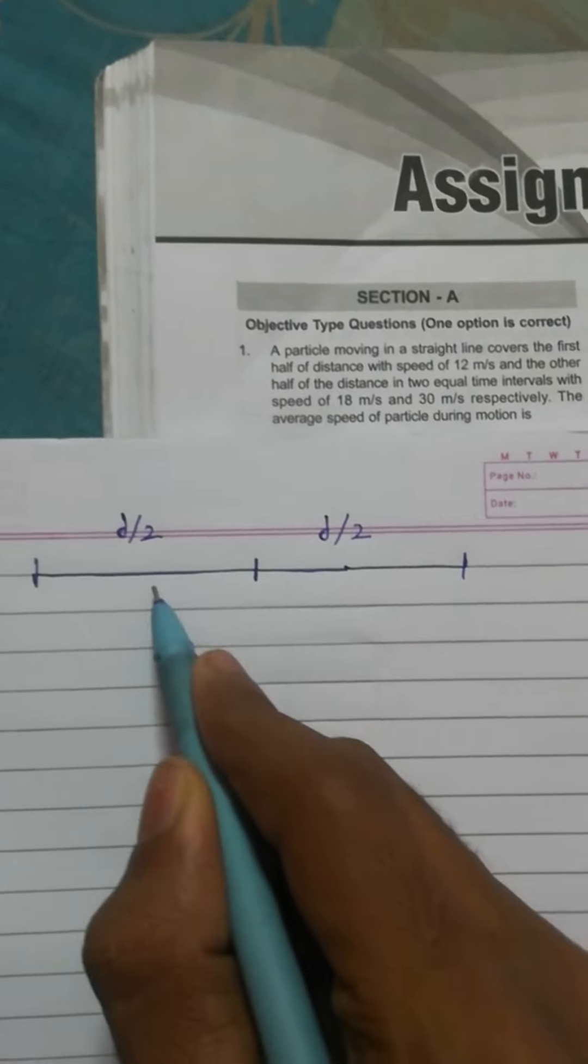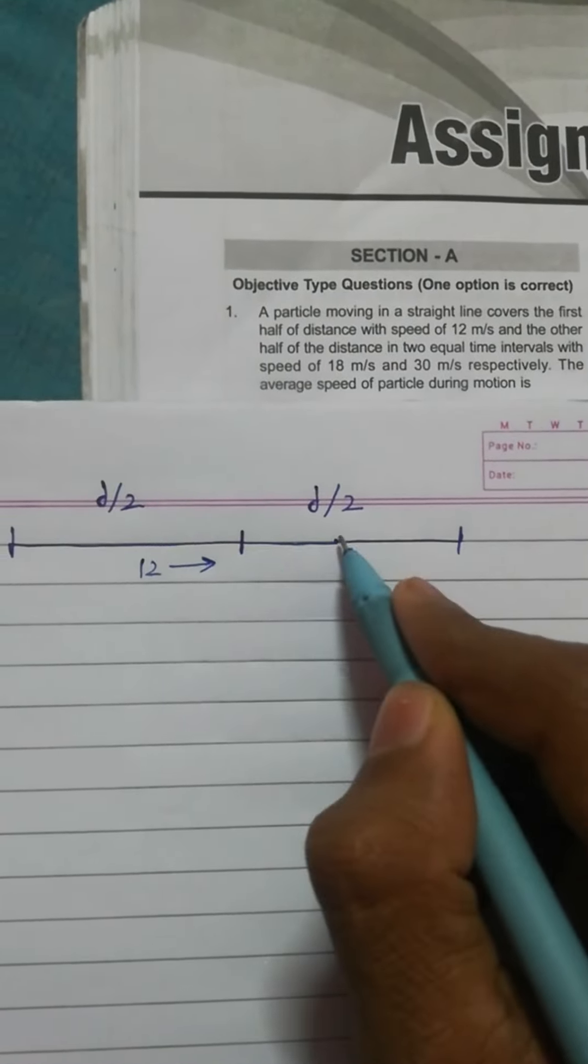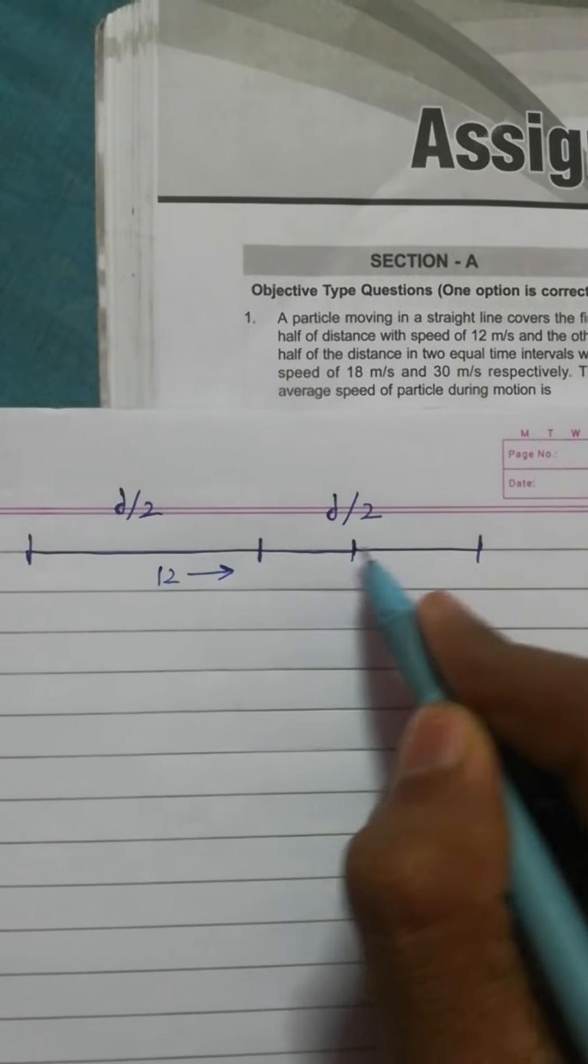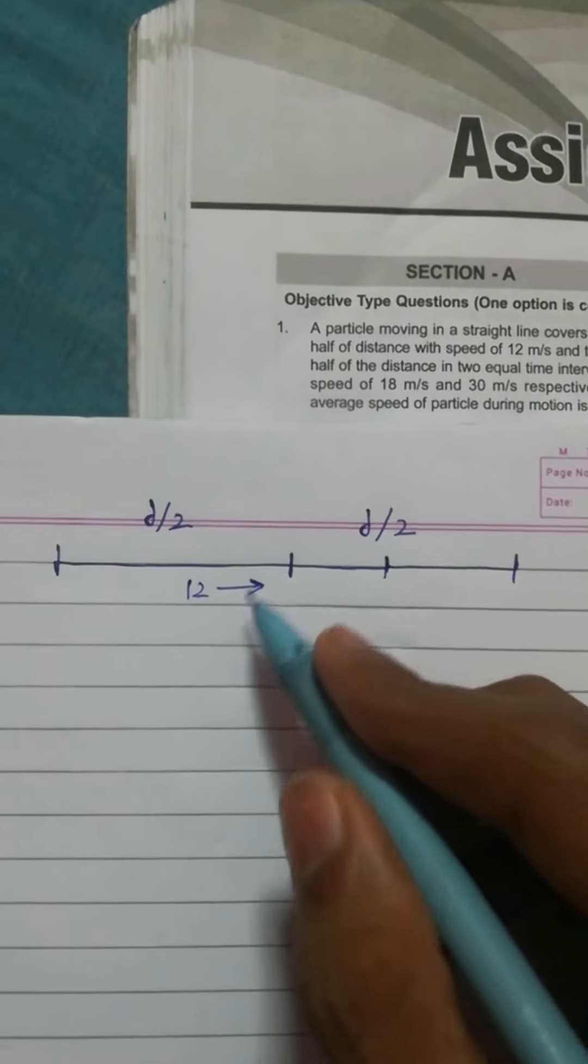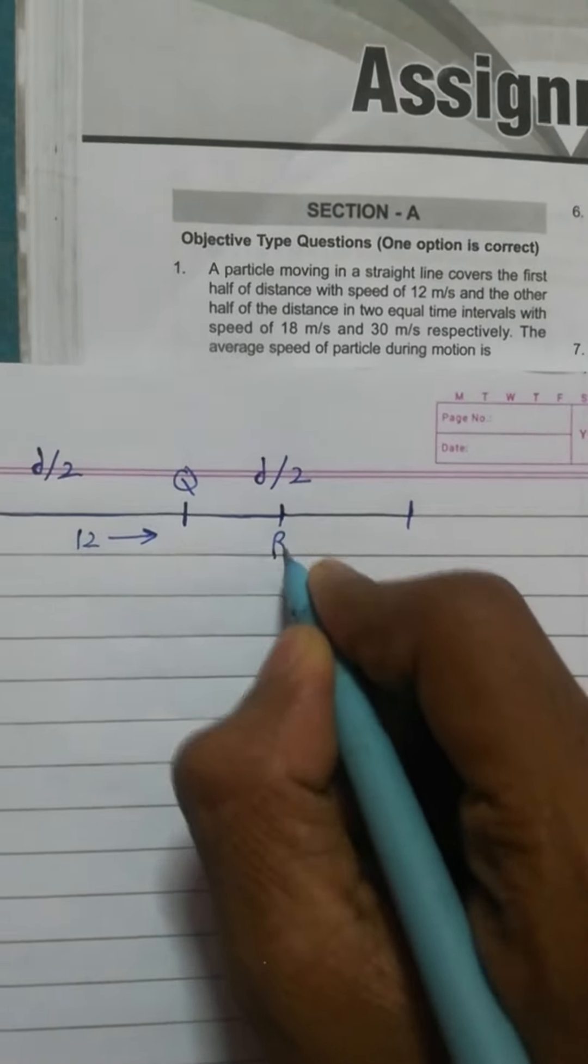And here it moved with 12 meters per second. And here we need to do 2 parts of this, so firstly we will mark it as P, Q, R, and S. These are the points.